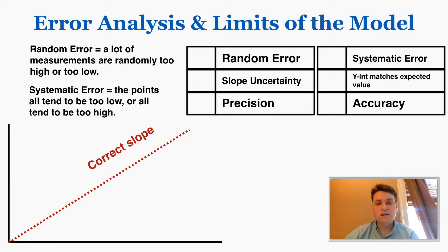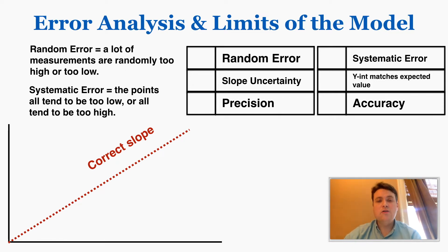But these things are not connected to each other. Random error is not connected to systematic error. Accuracy is not connected to precision, etc. I'll give you a visualization of that.